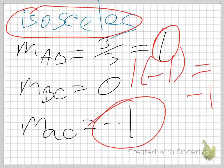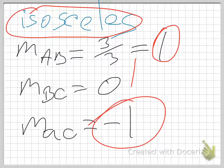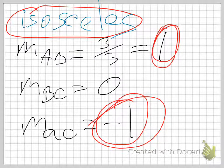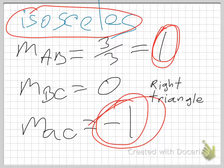One times negative one equals negative one, so AB and AC are perpendicular — they meet at a 90-degree angle. Therefore it is a right triangle.